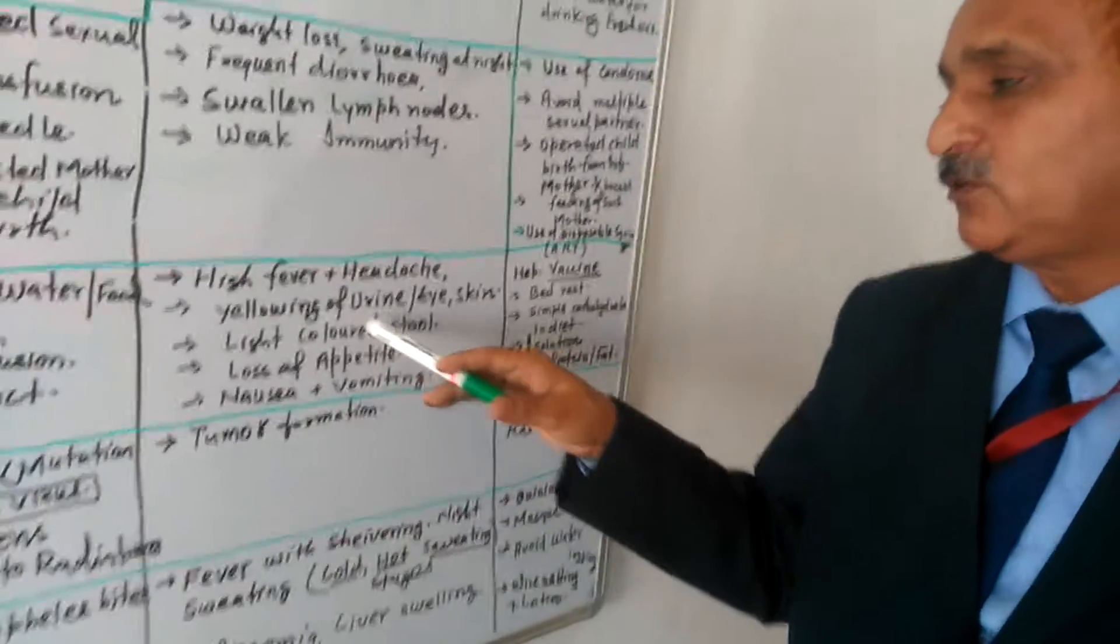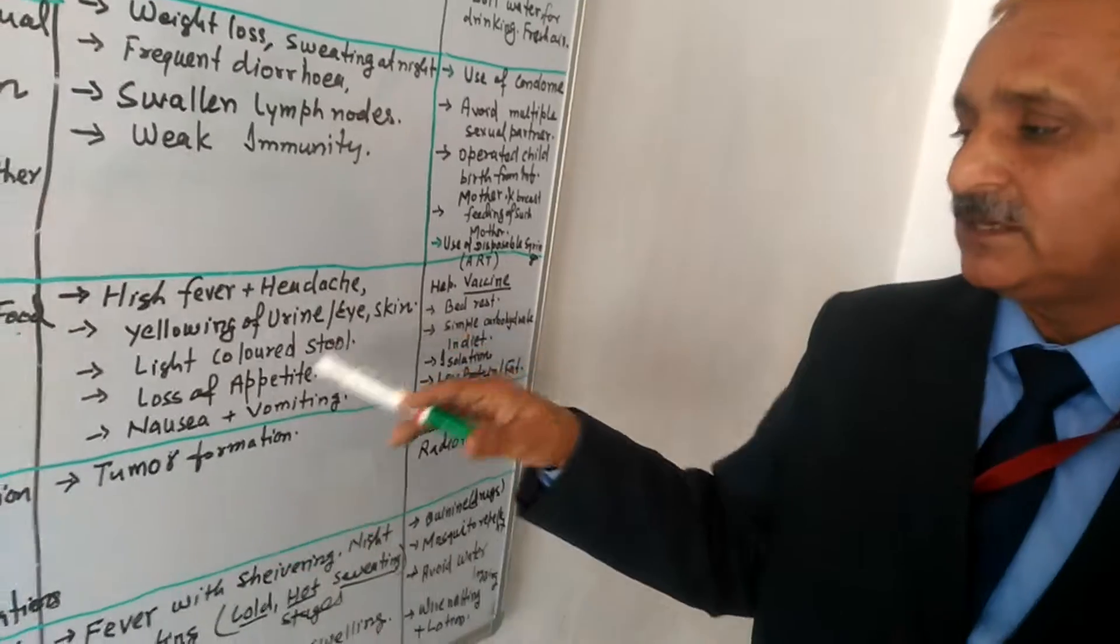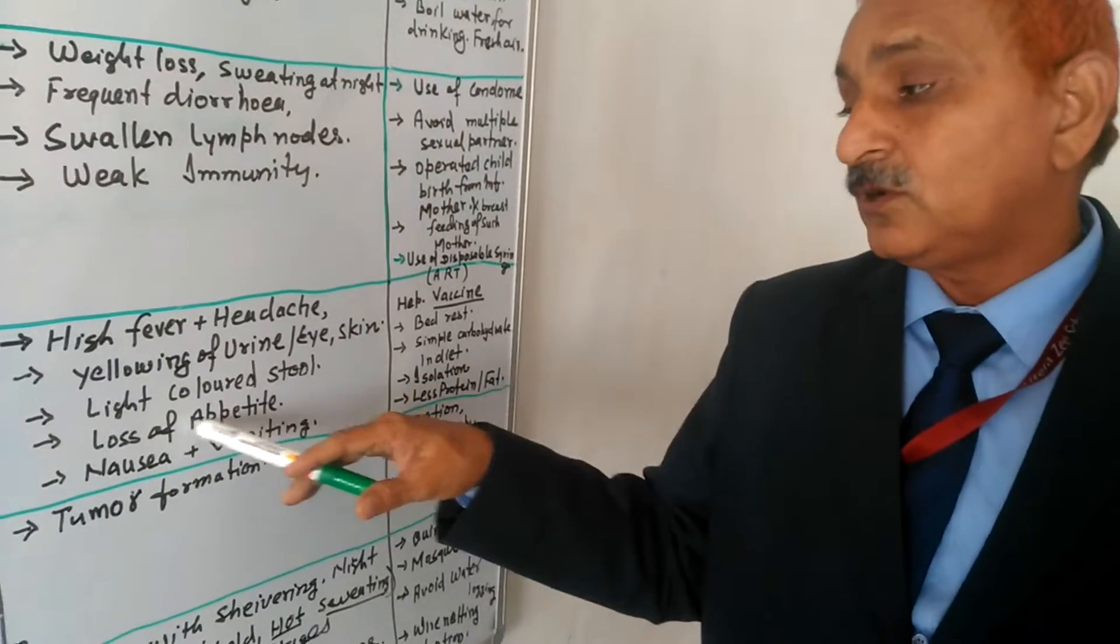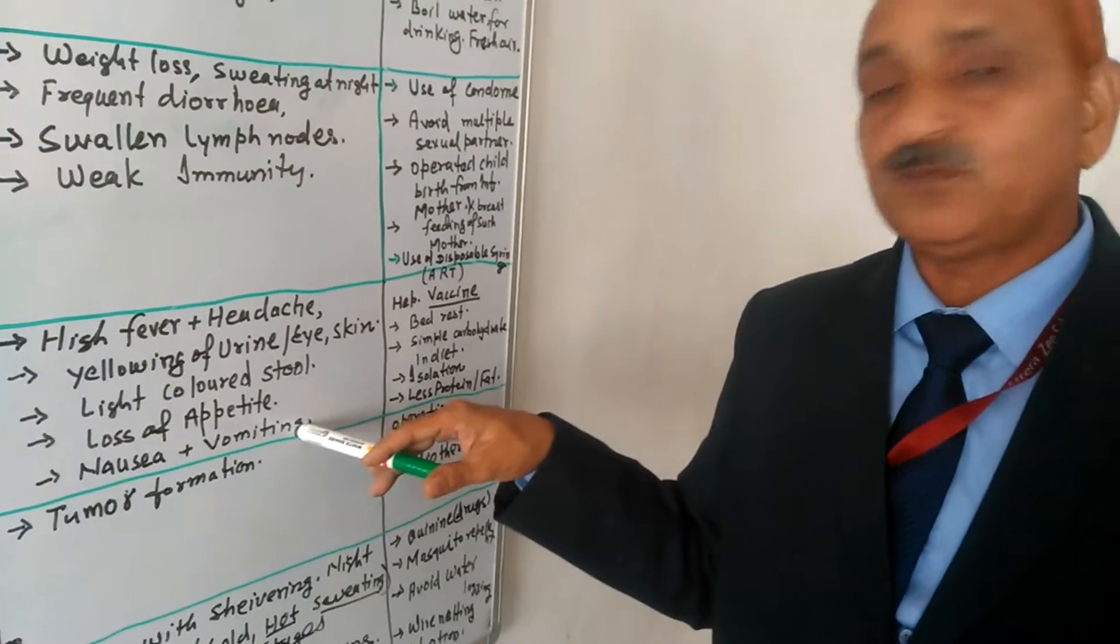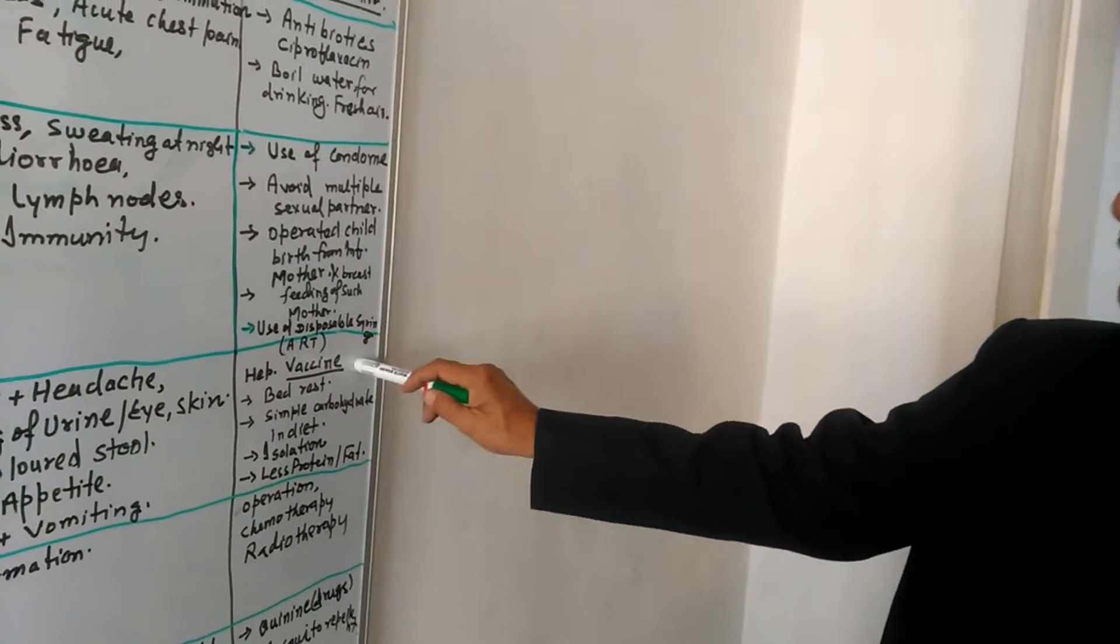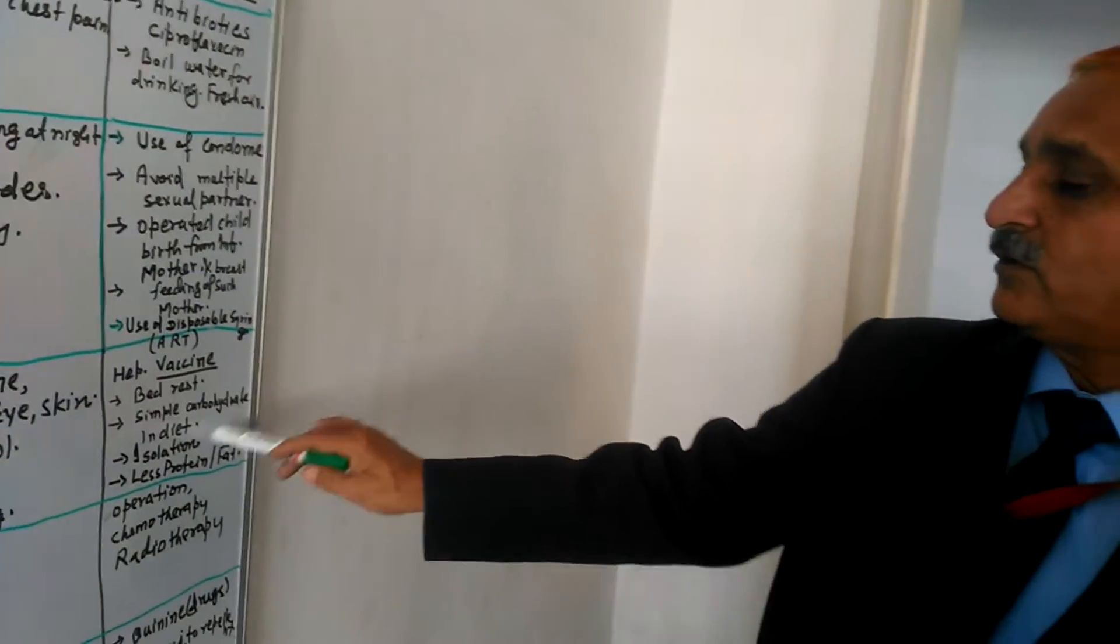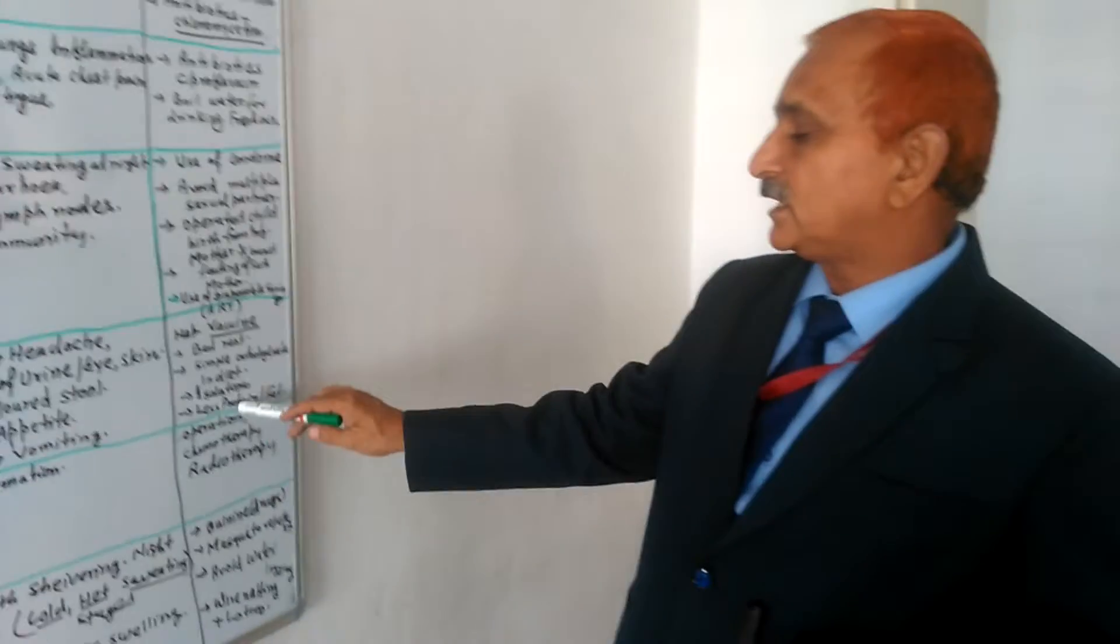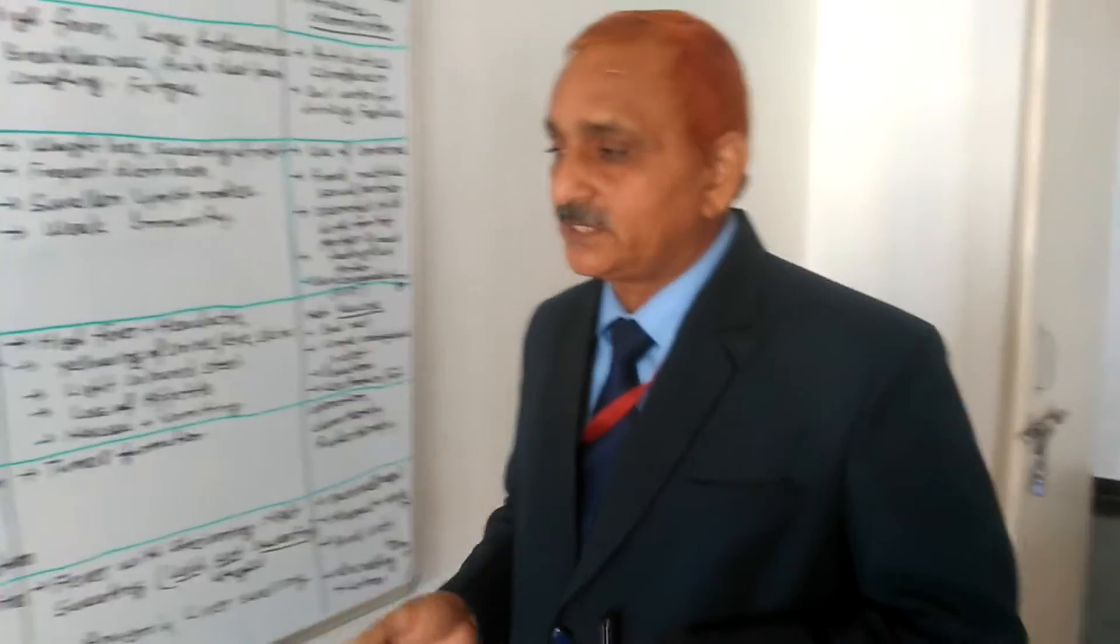High fever, headache, yellowing, urine, eye, skin, light colored stool, loss of appetite, nausea plus vomiting are the symptoms. We have a hepatitis vaccine, bed rest, simple carbohydrate in diet, isolation and less protein and fat diet should be taken.